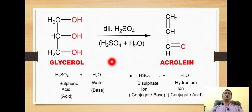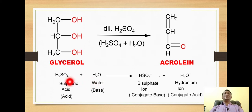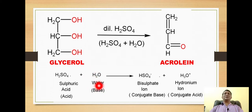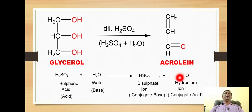When dilute sulfuric acid is used, it is a solution of sulfuric acid in water. This solution gives the formation of bisulfate ion and the hydronium ion. This happens by transfer of a proton from sulfuric acid to the water molecule. Sulfuric acid acts as an acid while water acts as a base. Water molecules are amphoteric in nature — in the presence of a strong acid they behave as a base, and this base water gets converted to the hydronium ion, which is the conjugate acid. This hydronium ion is important for the conversion of glycerol to acrolein.